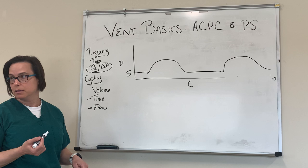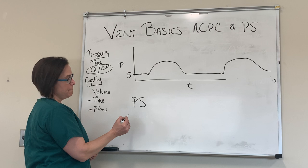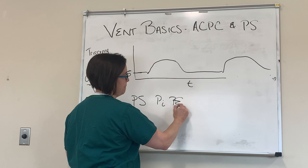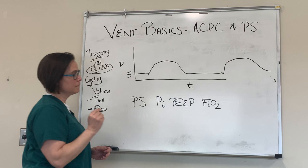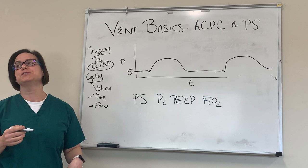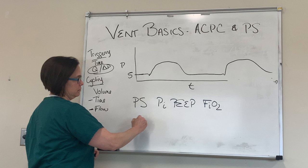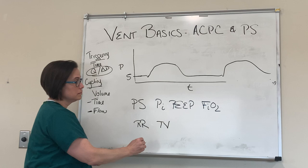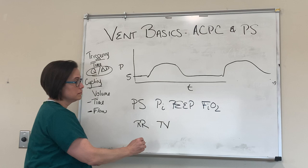So what do I need to tell a respiratory therapist to set my patient up on pressure support? It's going to be an inspiratory pressure, a PEEP, an FiO2, and then a backup rate — usually set around four to six — but not really the rate we're expecting them to use. And what do I want to know about what the patient's doing with it? You want to know their respiratory rate, their tidal volumes, their ABG, and their oxygen saturation. That's exactly right.